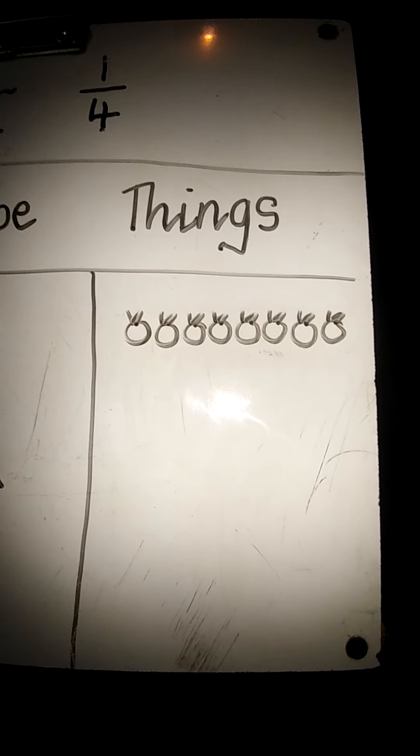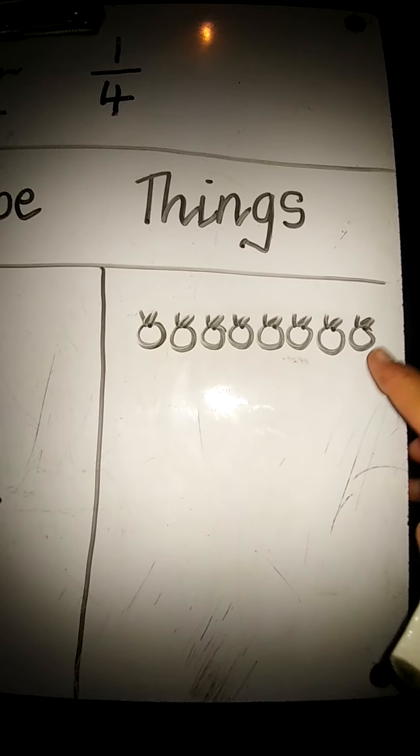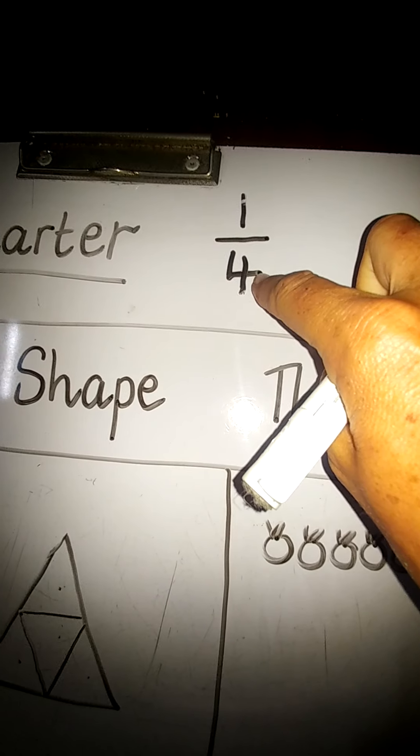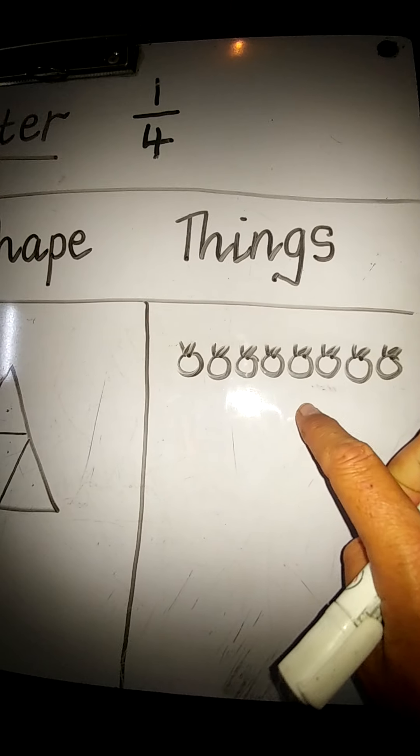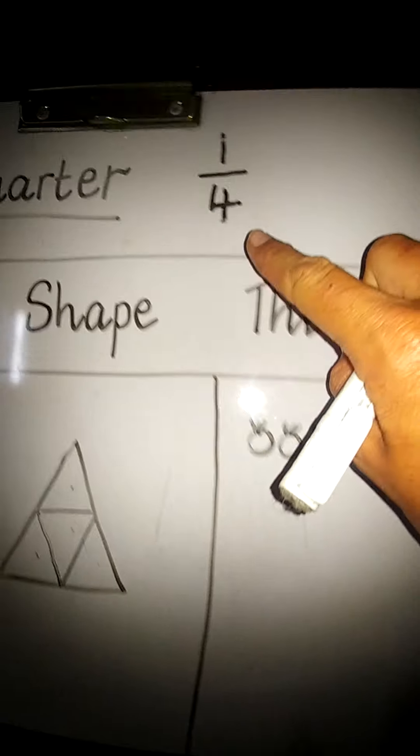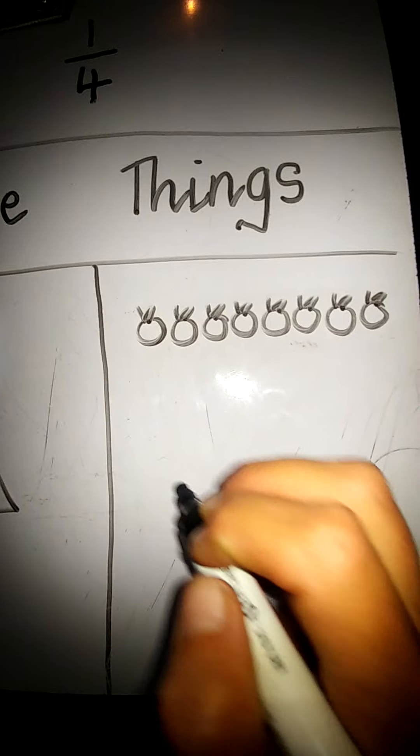For our things, I have chosen eight apples. But we have to share them. I want to find out what a quarter of eight is. So we're going to share them into four baskets.